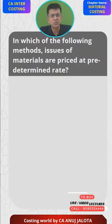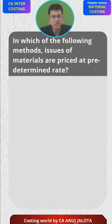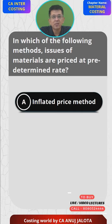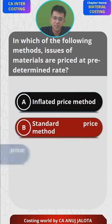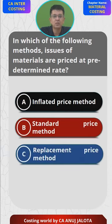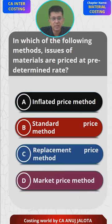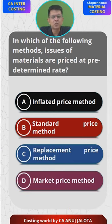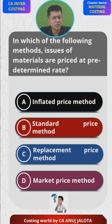Which of the following methods issues materials at a predetermined rate? A) Inflated price method, B) Standard price method, C) Replacement price method, D) Market price method. Think of the answer — you will be knowing by the names also. It's easy.